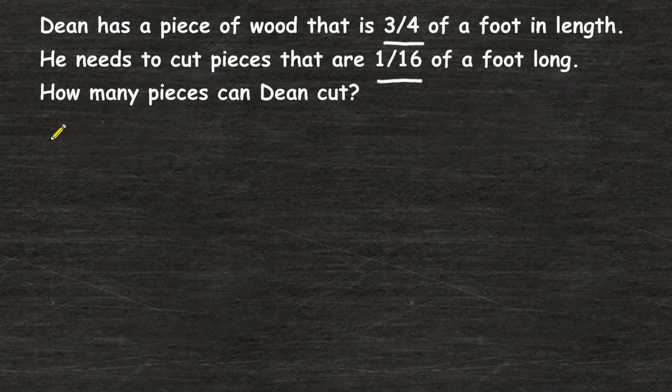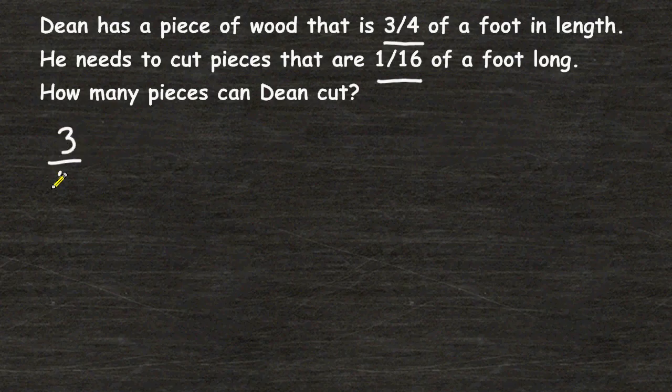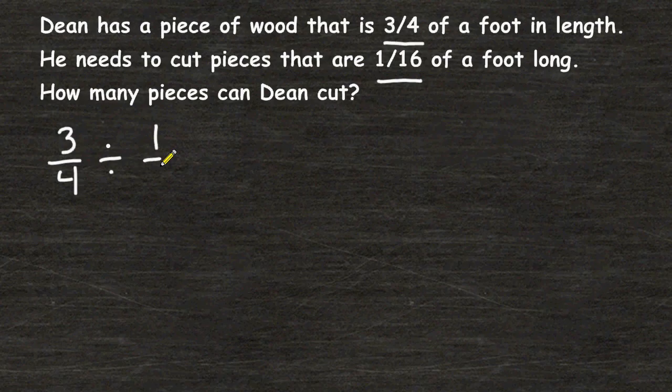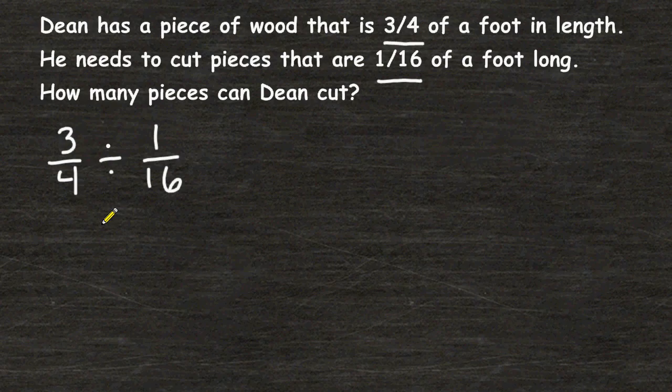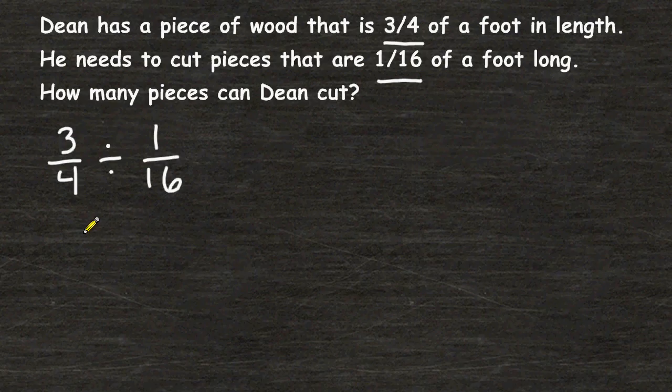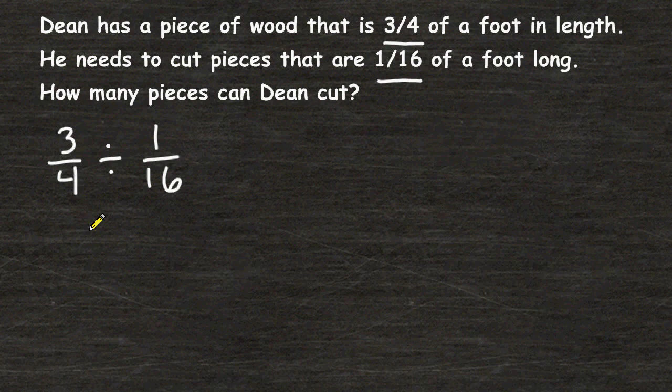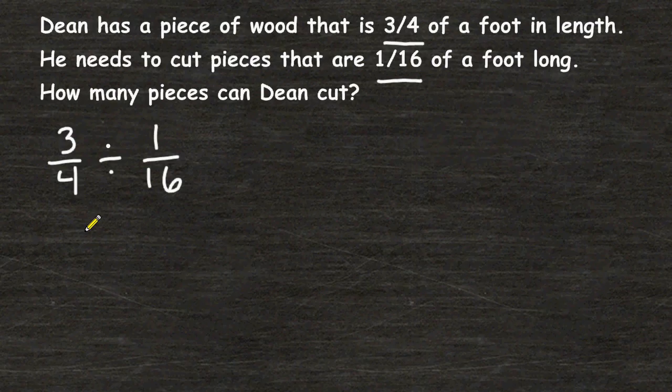So one thing we can do is take 3 4ths and divide that by 1 16th. Be cautious when setting up a division problem because the fraction you write first and the fraction you write second is very important. If you were to put the fractions in the wrong order you would come up with the wrong answer. Just remember that the amount that you are starting with, that is to be divided up or chopped up, must be written first and the other fraction go second.